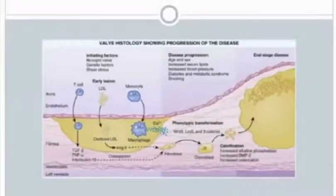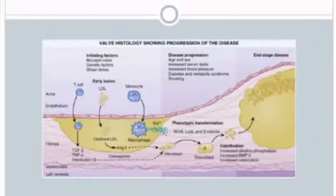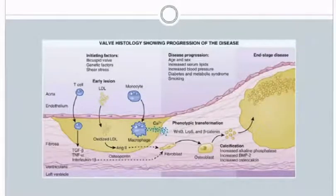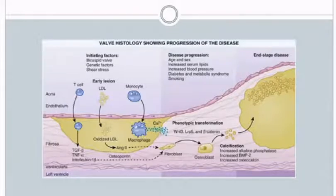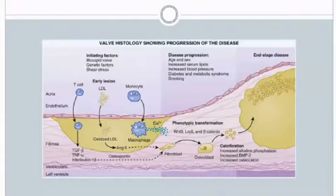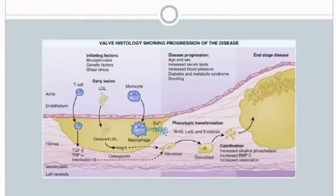Valve histology shows disease progression beginning with initiating factors such as shear stress, bicuspid aortic valve, and genetic factors. These cause early lesions — valve structure is altered with T-cell infiltration, LDL accumulation, oxidized LDL, and macrophage accumulation. These lead to fibroblast and osteoblast formation. Disease progression is accelerated by advancing age, increased serum lipids, increased blood pressure, diabetes, metabolic syndrome, and smoking, ultimately resulting in calcification of the aortic valve.